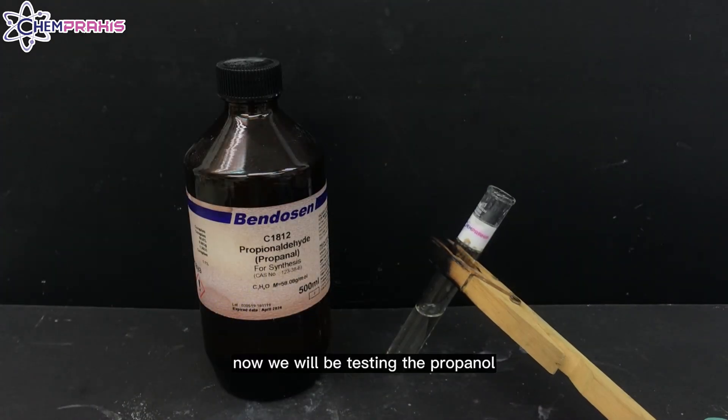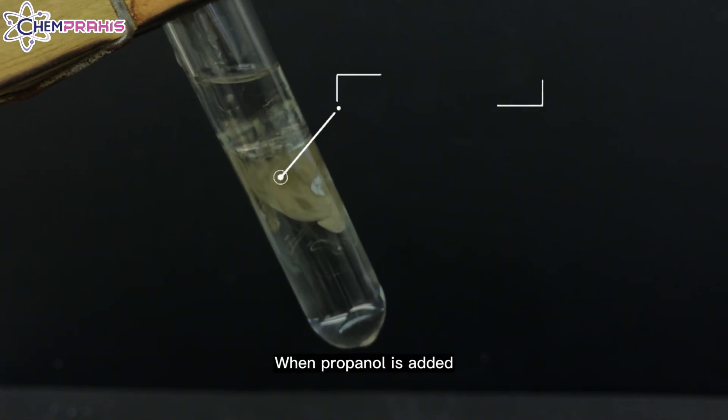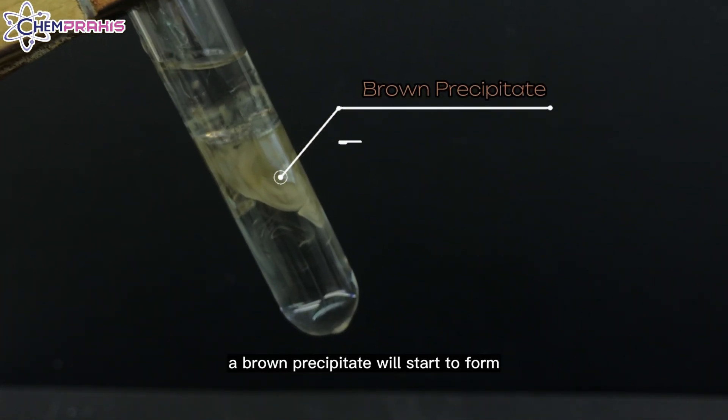Now, we'll be testing the propanol using the Tollens reagent. When propanol is added, a brown precipitate will start to form.